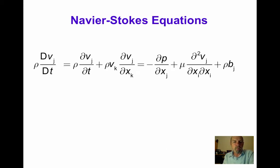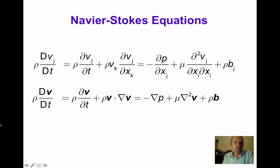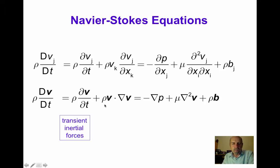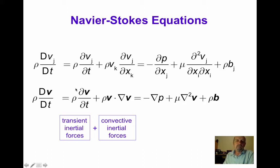In direct notation, the Navier-Stokes equations are: ρ Dv/Dt, which expands to ρ ∂v/∂t plus ρ(v · ∇)v, equals minus ∇p plus μ ∇²v plus ρb. The terms represent: ρ ∂v/∂t is the transient inertial force, and ρ(v · ∇)v is the convective inertial force — both are mass per unit volume times acceleration, seen by a fixed Eulerian observer and moving particles respectively.